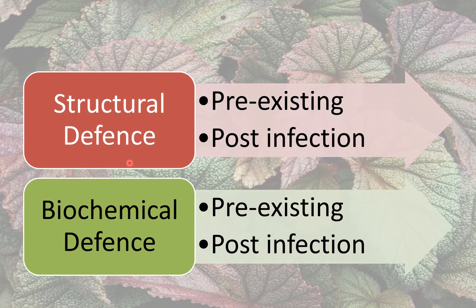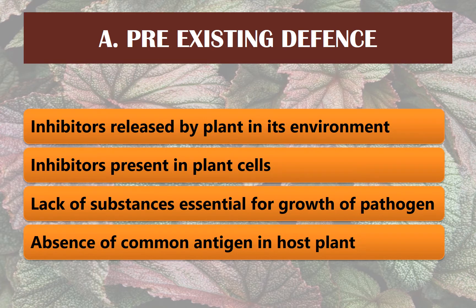We have completed the structural defense mechanisms, both pre-existing as well as post-infection, and we have already discussed about the pre-existing biochemical defense mechanisms. Under that we have inhibitors released by the plant into its environment, inhibitors present in the plant cells, substances required for pathogen growth lacking in the plant, and absence of common antigen in the host plant. So in today's class let us discuss about the post-infection or active biochemical defense mechanisms.